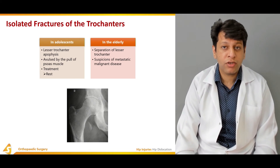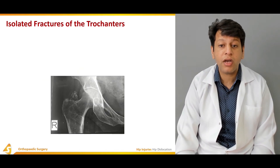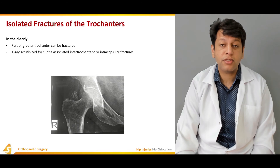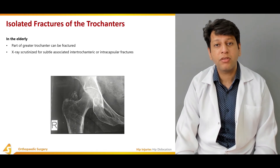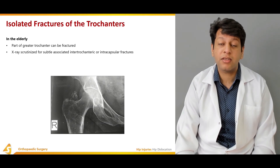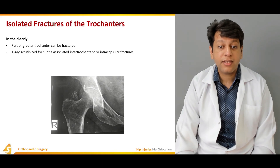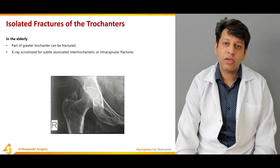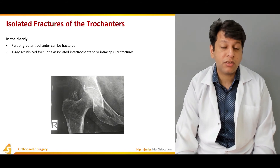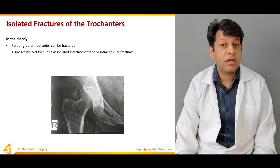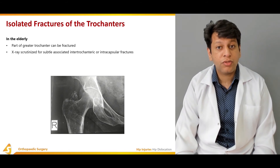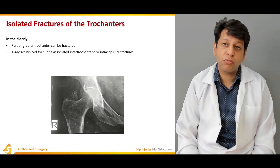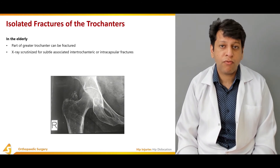Regarding isolated greater trochanteric fractures in the elderly — the gluteal muscles and iliotibial band attach to the greater trochanter, and part of it can fracture. The X-ray should be carefully scrutinized for subtle association with intertrochanteric or intracapsular fractures — it must not be confused with a Boyd and Griffin type 1 undisplaced intertrochanteric fracture or a Garden type 1 undisplaced neck of femur fracture. Trivial trauma in an elderly patient may give a false impression of a simple avulsion fracture.